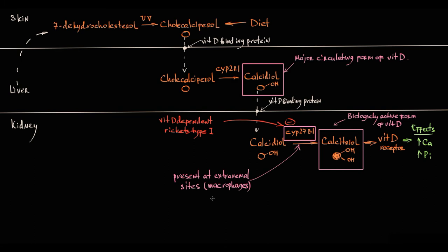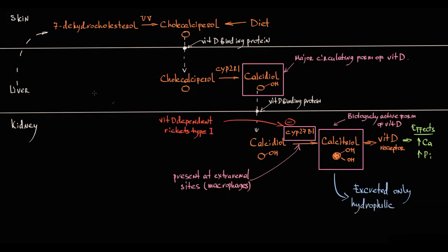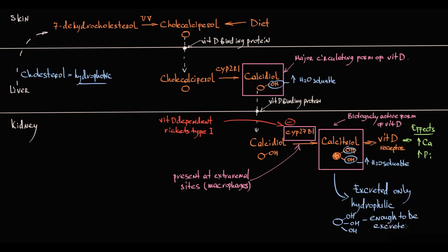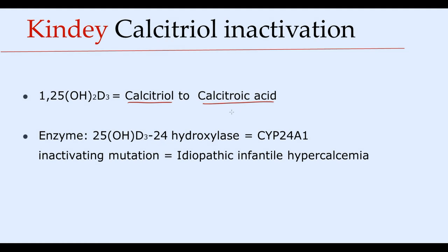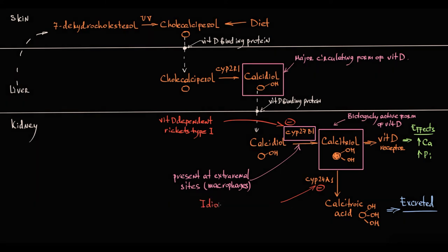At some point, the active form of vitamin D must be inactivated and excreted. To be excreted, a substance must be water-soluble, so-called hydrophilic. Vitamin D is a fat-soluble substance because it originates from cholesterol, which is a hydrophobic molecule. With each hydroxylation, vitamin D acquires an additional hydroxy group making it more water-soluble. But to be excreted, it requires a third additional hydroxy group. So in the kidney, calcitriol is converted to calcitroic acid. This reaction is catalyzed by the enzyme 25-hydroxyvitamin D3-24-hydroxylase, also called cytochrome P24A1. Calcitriol is thus converted by cytochrome P24A1 to calcitroic acid, which has the third additional hydroxy group making the molecule hydrophilic enough to be excreted into the bile. Inactivating mutations of cytochrome P24A1 will cause idiopathic infantile hypercalcemia, because without this enzyme, calcitriol cannot be inactivated, causing increased calcium absorption and long-standing hypercalcemia.